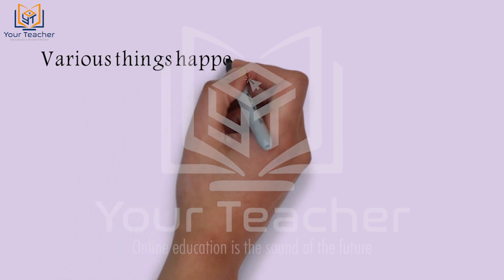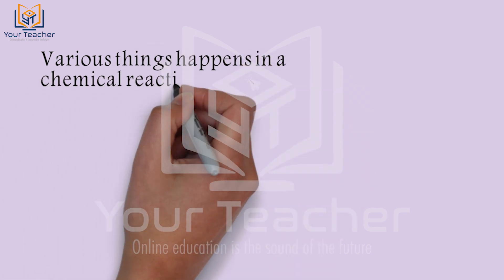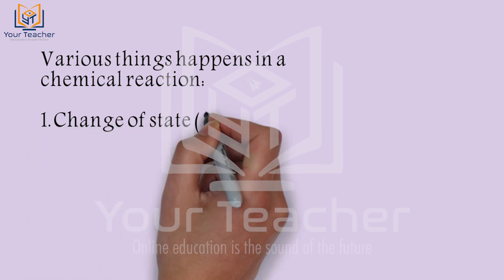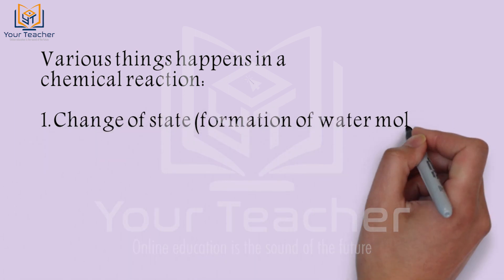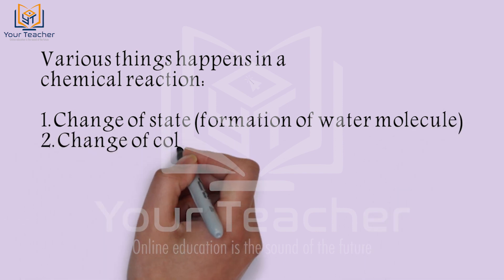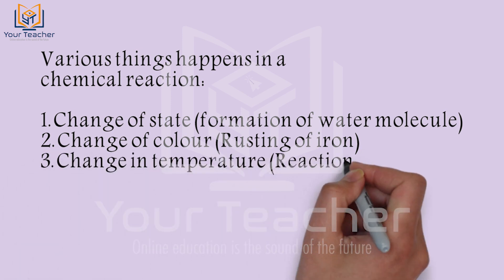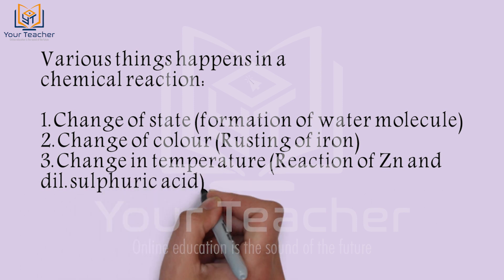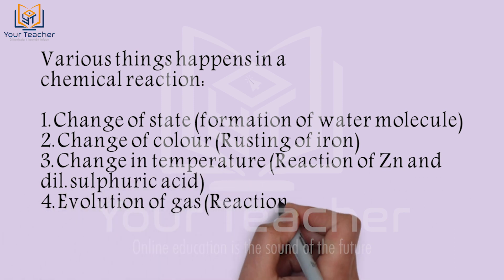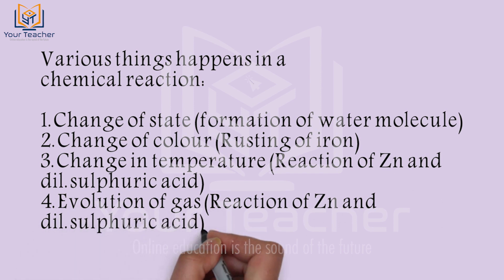Various changes happen in a chemical reaction. One of them is a change of state. For example, the formation of a water molecule: hydrogen gas reacts and forms water molecule. Water is in liquid state, while hydrogen was in gaseous form. So a change of state occurs during this chemical reaction.